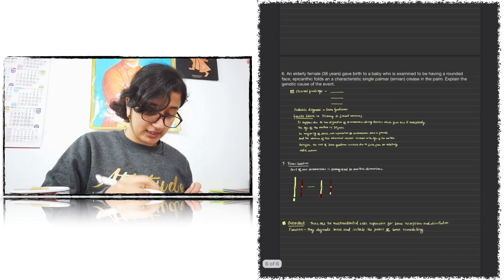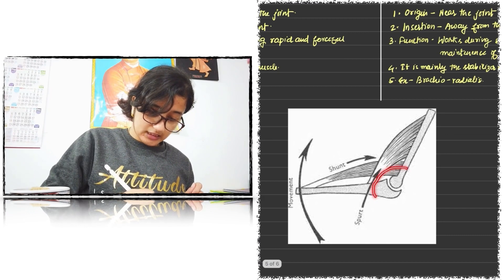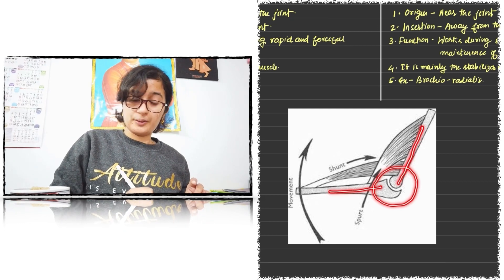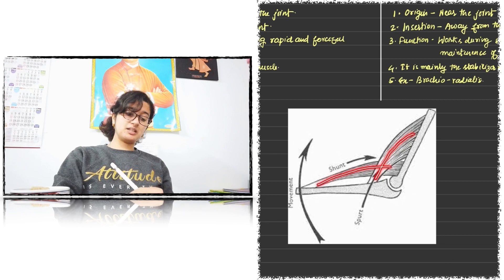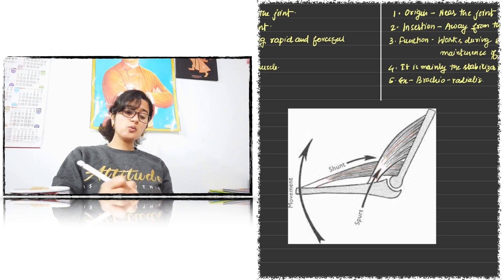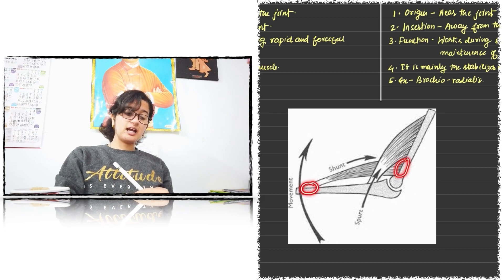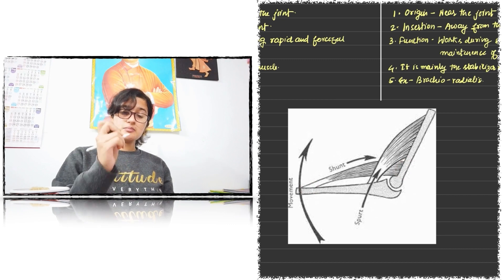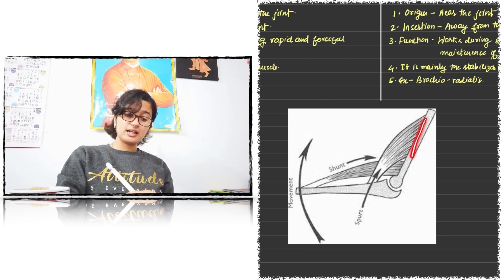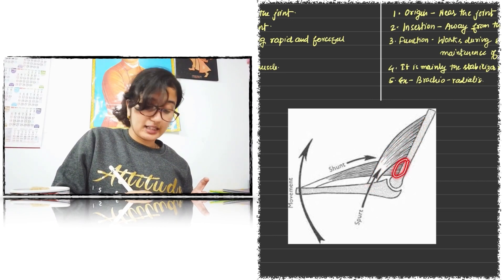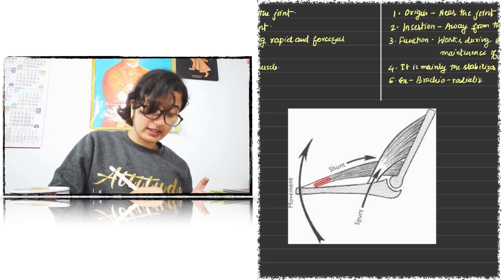The next question is about spurt and shunt muscles. Looking at the diagram of a synovial joint with two bones forming it, we can see two kinds of muscles. One muscle takes its origin away from the joint and inserts near the joint — that muscle is called the spurt muscle. The other muscle takes its origin near the joint and inserts at a distant place — that muscle is called the shunt muscle.